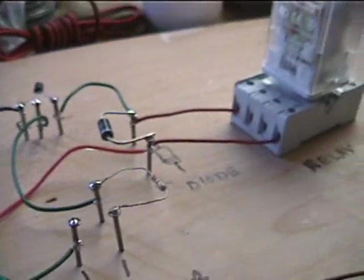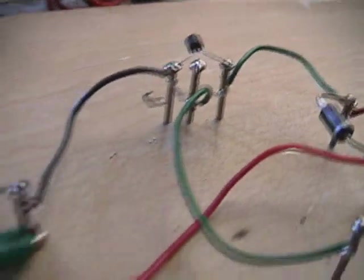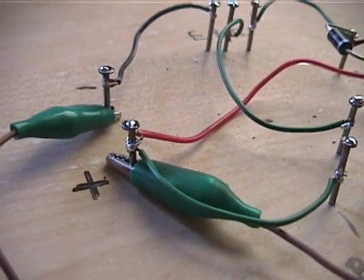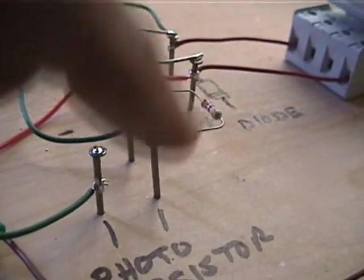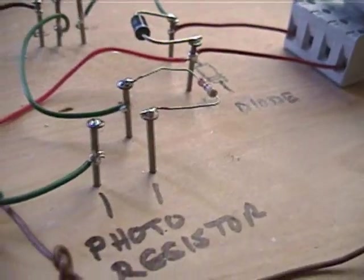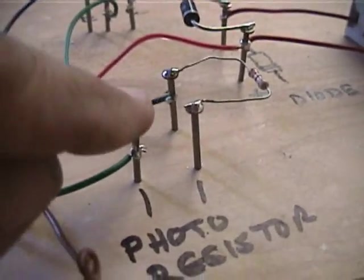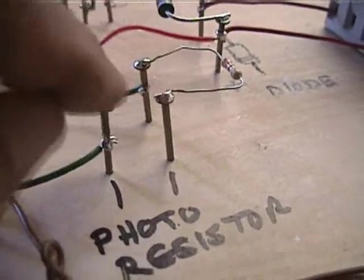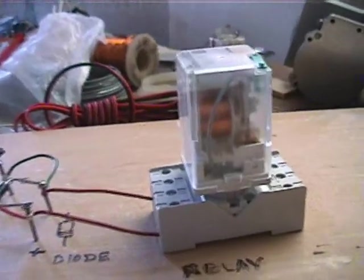As you can see, we already have our relay, our diode, our transistor, our battery connected there, positive and negative. And then we have this resistor R1 in Figure 21. The only thing we need to have our circuit ready will be to connect our photoresistor right here. Of course, right now the relay is deactivated. It is not activated.